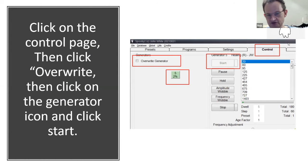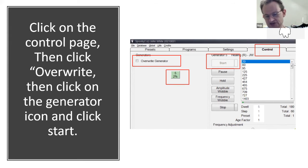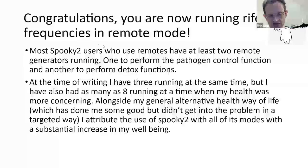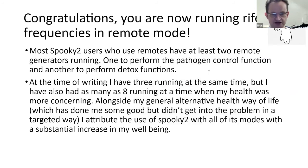The final stage is the Control panel. Once you're in the Control tab, click the Overwrite Generator box, then click on the generator itself — one of the colored boxes beneath the Overwrite Generator label — then click Start. That's it, set and forget. You can go out for dinner, watch TV, go for a bike ride, and still get the benefit from this thing. Most Spooky2 users who use remotes have at least two remote generators running: one to perform pathogen control, and another to perform detox functions.